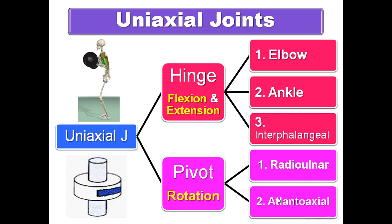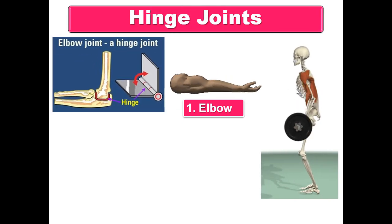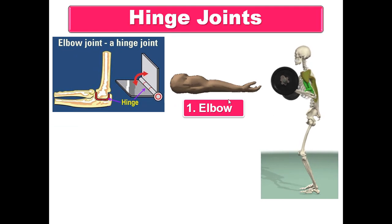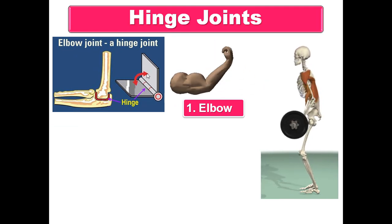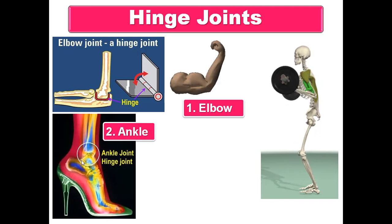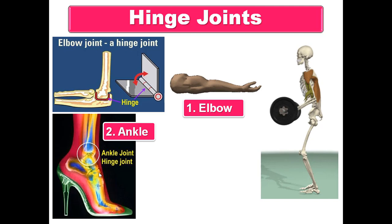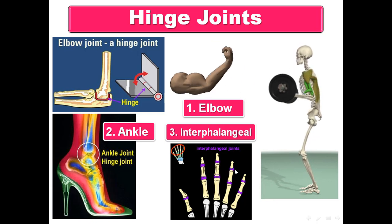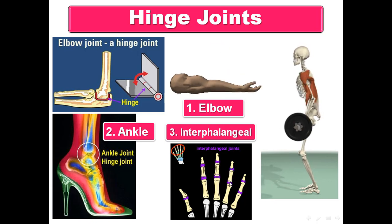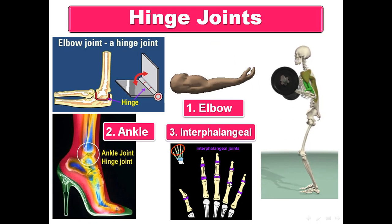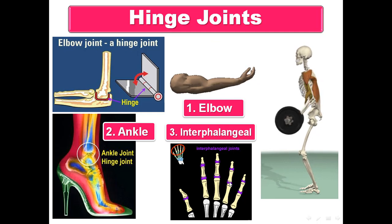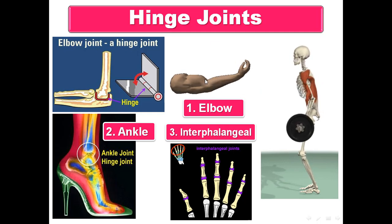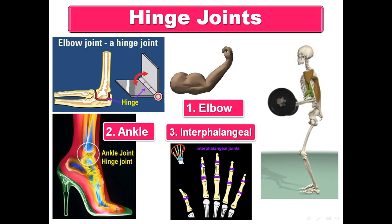Hinge joints permit flexion and extension along a horizontal axis. Examples: elbow joint, ankle joint, and the interphalangeal joints — the joints between the phalanges of the fingers.